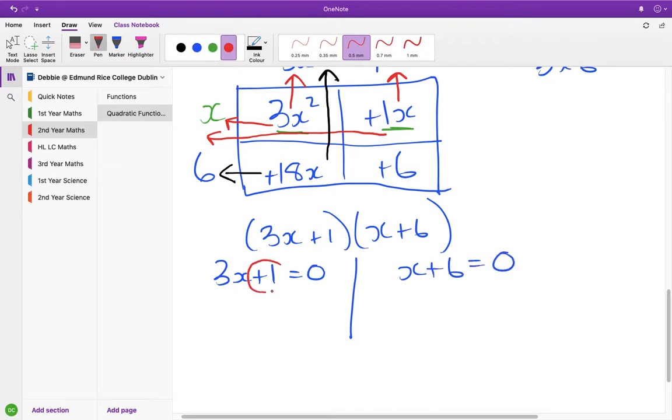We're going to solve for x, which means we need to bring that across. It will become a minus, so that gives us 3x equals minus 1. And then we're going to divide by 3 to get rid of that 3, but if you do it on the left, you have to do it on the right. So we're getting x equals minus 1 third.